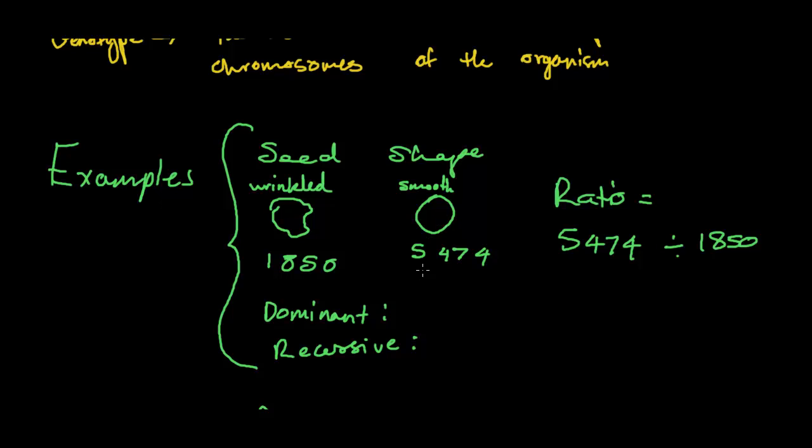Well, if smooth is occurring more, then that has to be the dominant trait. So I'm just going to write here, smooth. And obviously, if that's going to be the dominant trait, this is going to be the recessive, so you've got wrinkled here.